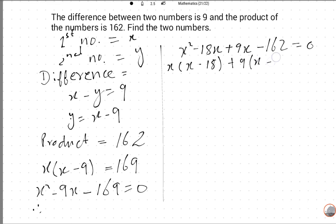9 times X minus 18. So I am writing the direct values: one value is X is equal to 18 and the second value is minus 9.